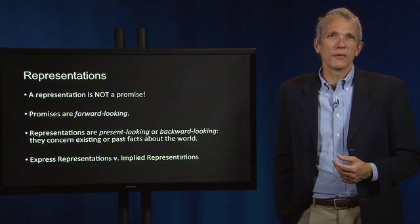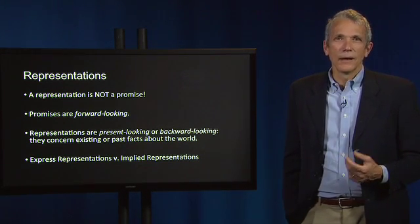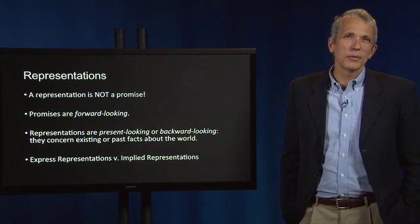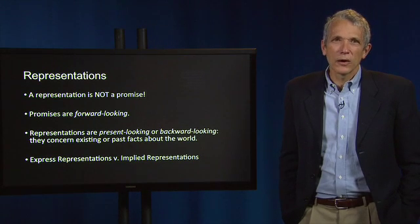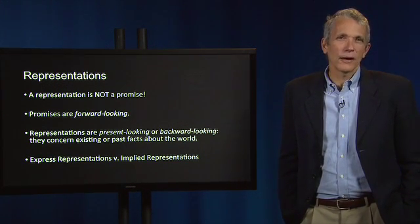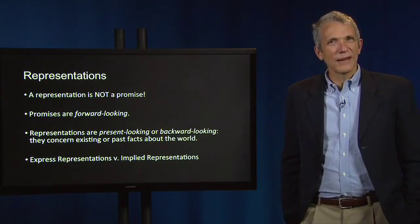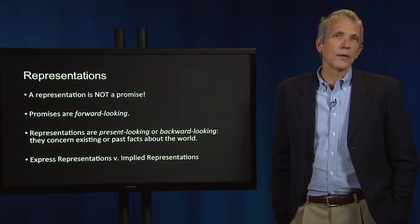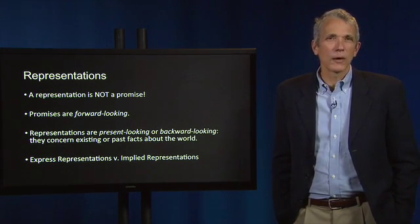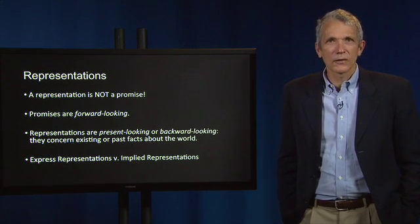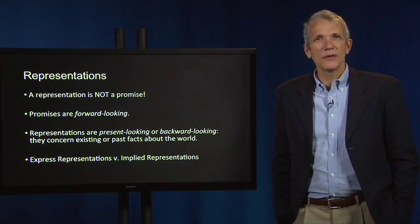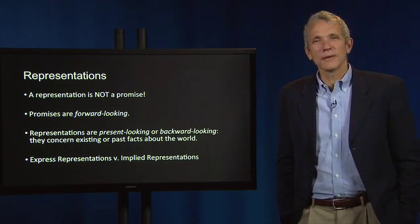Most sellers implicitly represent, for instance, that they own the things they are selling and that those things are of reasonable quality. Moreover, it's possible for explicit promises to throw off implicit representations. When I promise to deliver a car, I implicitly represent that I presently intend to perform that promise — that's how the doctrine of promissory fraud is possible. Conversely, explicit representations can throw off implicit promises. When I represent that my car was only driven to church on Sunday, I implicitly promise or warrant that my representation is true. Explicit promises or representations can throw off a host of implicit representations or promises, and part of the task of being trained in contracts law is being able to hear these implicit utterances.